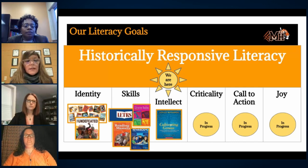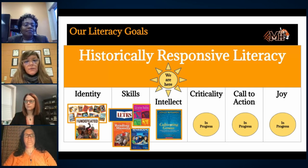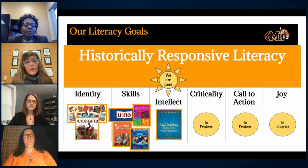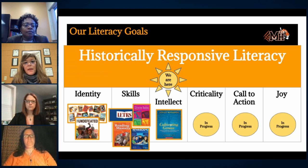We had focus on identity through our home library collections and a book we're using this year — similar to Angela Joy's Black as a Rainbow Color last year, we're going to be focusing on Kwame Alexander's Undefeated this year. We'll learn more about our skills that we're building, both us adults and our children as learners, and our work that Dr. Thompson mentioned around Cultivating Genius. We are building our own intellectual capacity, and we are in progress toward the other pursuits of criticality, a call to action, and joy.